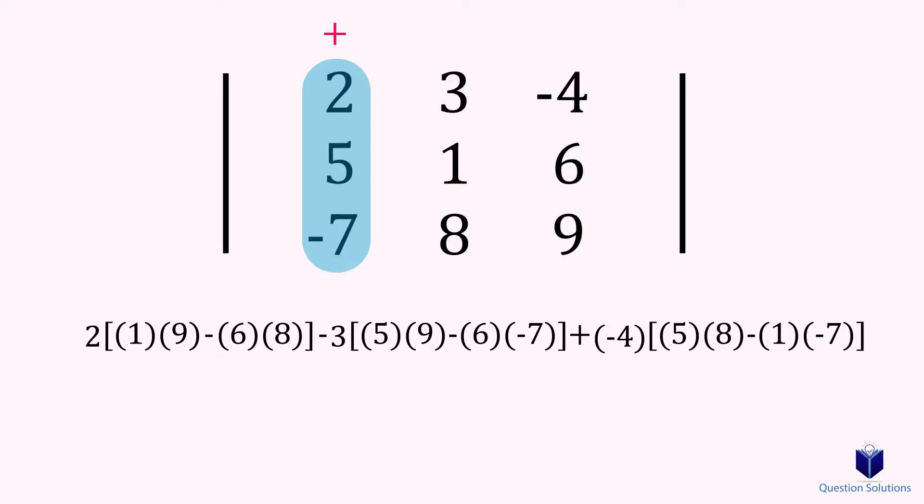Every time we switch covering a column, the sign must change, starting from positive, then negative, and then finally back to positive. Now all that's left is to simplify and solve. Remember that this will give us a scalar value, not a vector value.